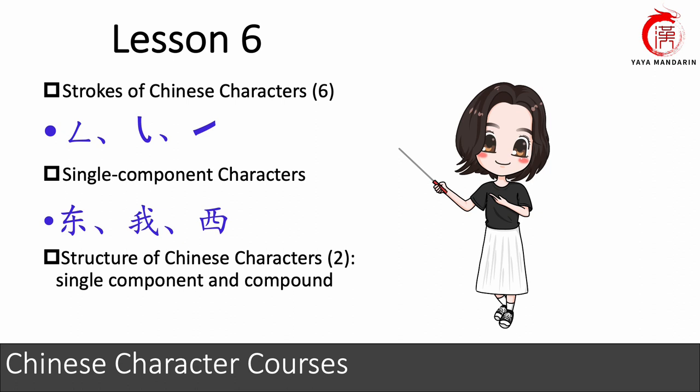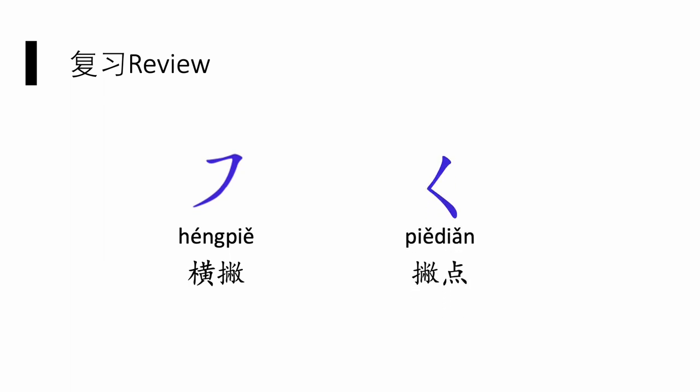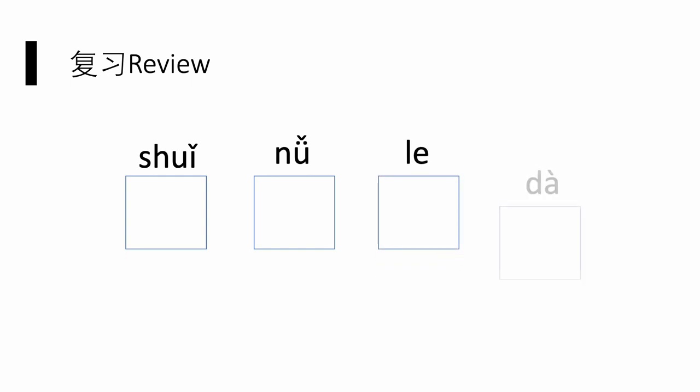Let's do a quick review now. In the previous lesson, we learned these strokes. Go through with me again and see if you still know them. First one, 横撇, and the second one, 撇, 点. After learning these two strokes, we can know how to write the following characters.